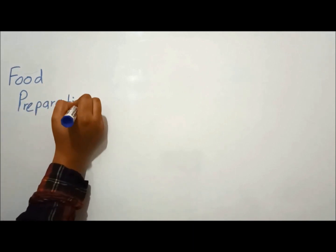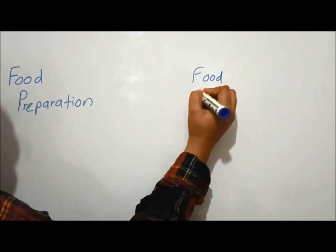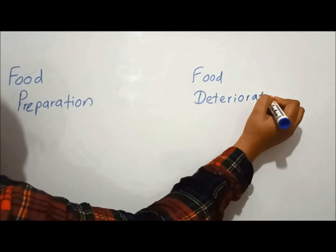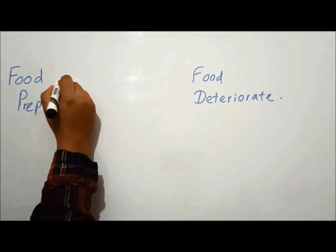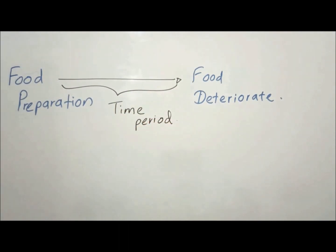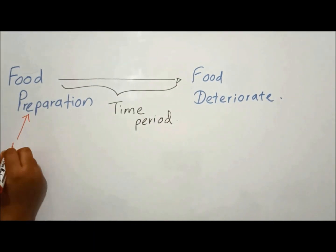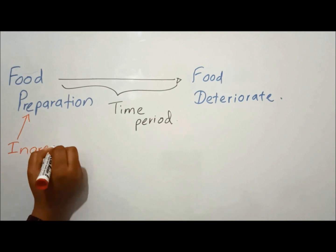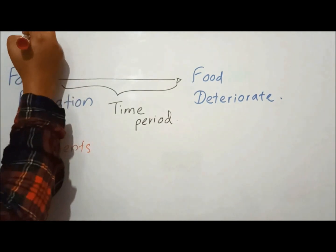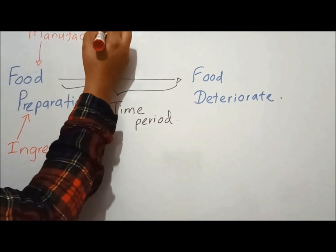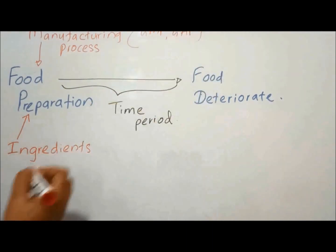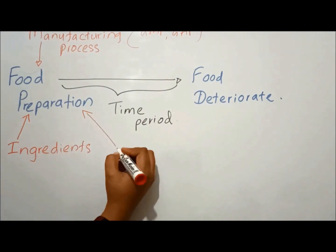The shelf life of a product begins from the time the food is prepared or manufactured. Its length is dependent on many factors including the types of ingredients, manufacturing process, and type of packaging.